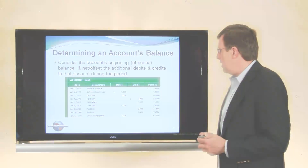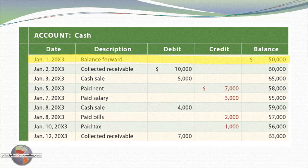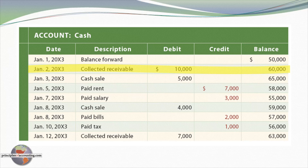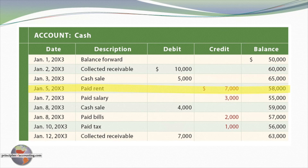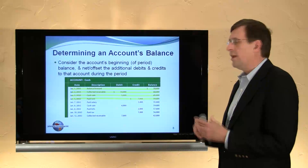Let's see how we determine an account's balance. Returning to the earlier illustration, instead of saying increase and decrease in the columns, we now say debit or credit. Cash has a beginning balance of $50,000 — the normal balance for an asset is debit. On January 2nd, we collected a receivable, cash went up, so cash is debited $10,000, bringing the balance to $60,000. On the next transaction, a cash sale, cash goes up another $5,000 — another debit to cash of $5,000. When paying rent, cash is going down, so we credit cash $7,000 to reduce it to the $58,000 balance.